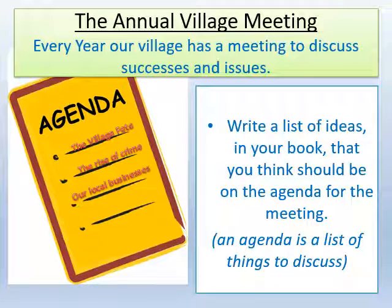Now I want you to write a list of ideas in your book that you think should be on the agenda for the meeting. An agenda is just a list of things to discuss. It could be potholes in the road, street lighting, a youth club for young people to go to in the evenings, more funding for the school, a car park for the shops, Christmas lights — anything like that. Make as long a list as you can, and I'll give you 10 minutes to do that.